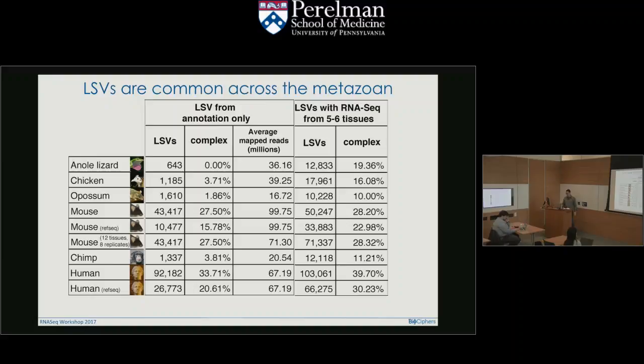Question from audience: for your LSV definition, is the genome information irrelevant because it's not just a genome? Response: it's a transcriptome, so we use transcriptome annotation like RefSeq or Ensembl. The point is if the genome is not very well annotated, then the transcripts are not well annotated, which means if you just look at the databases you won't find much for lizard. If you start looking at RNA-seq data, you finally find a lot of those complex variations — which is what you're seeing in the figure.